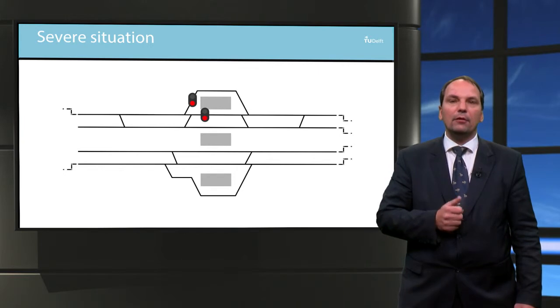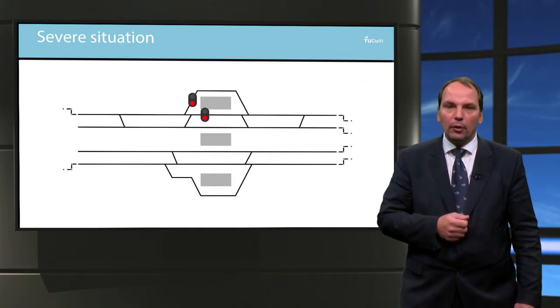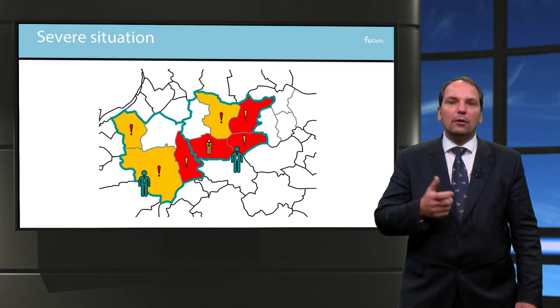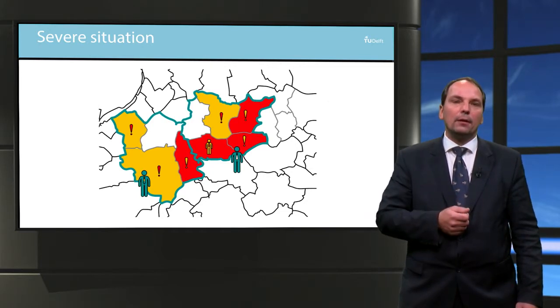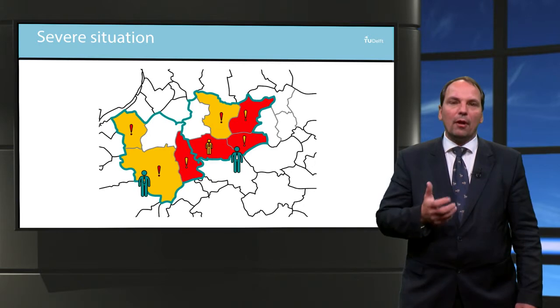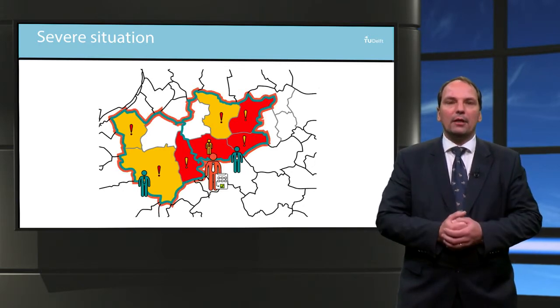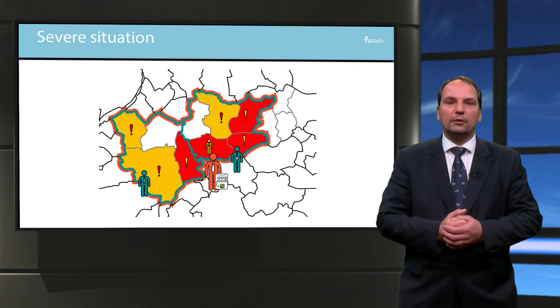This severe interruption has impact on the multiple regions, causing larger deviations in the regular schedule. The train dispatcher alerts the surrounding areas to the local dispatcher. The central dispatcher creates, in collaboration with the local dispatcher, an executable and safe plan.